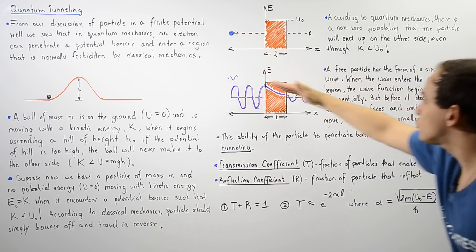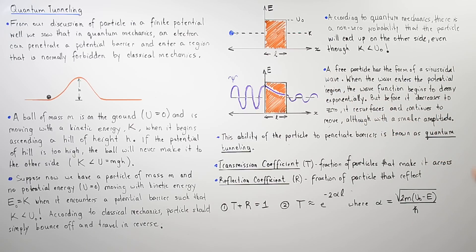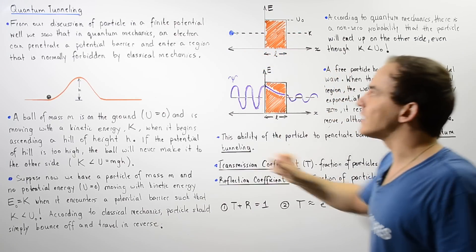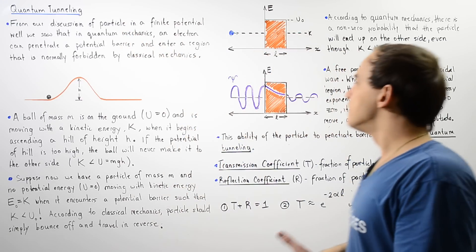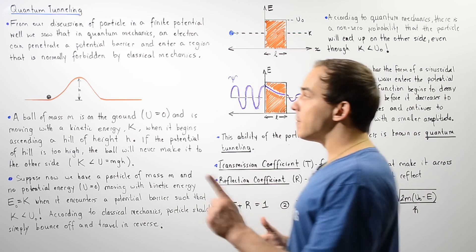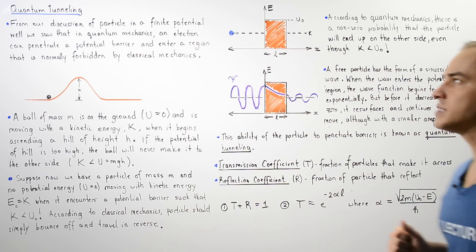However, before it actually decreases to zero, it resurfaces on the other side and continues to move, although with a smaller amplitude. So this exponential decrease was spoken about when we discussed particles moving inside finite potential wells. Now, this ability of the electron, of the particle to penetrate barriers, potential barriers is known as quantum tunneling.